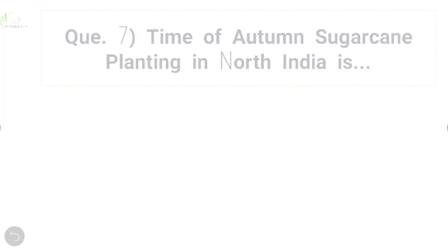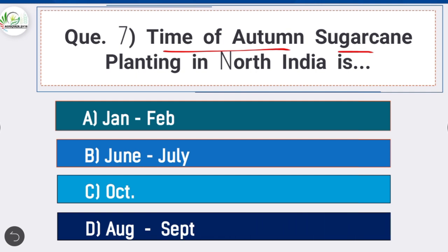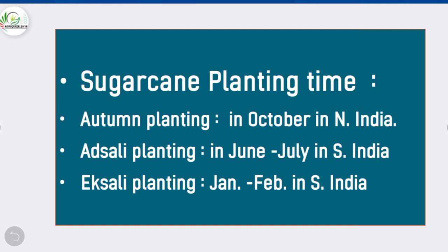Question 7: Time of autumn sugarcane planting in North India is — option C is correct: October. Here is a list of planting times: autumn planting in October in North India; atsali planting in June–July, takes 15–18 months for harvesting, commonly grown in Maharashtra and South India; spring planting in January–February, takes about one year, commonly grown in North India.